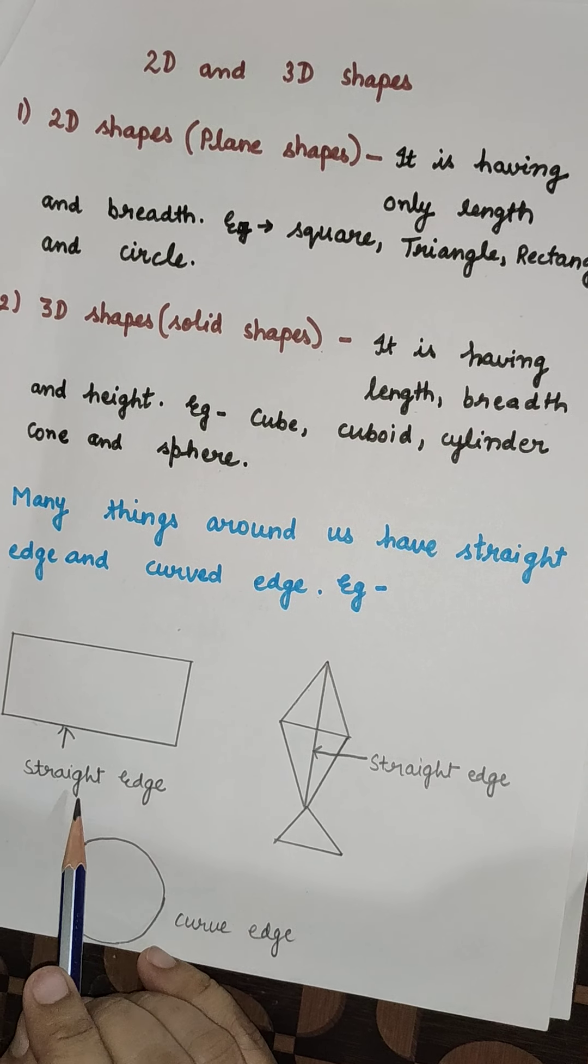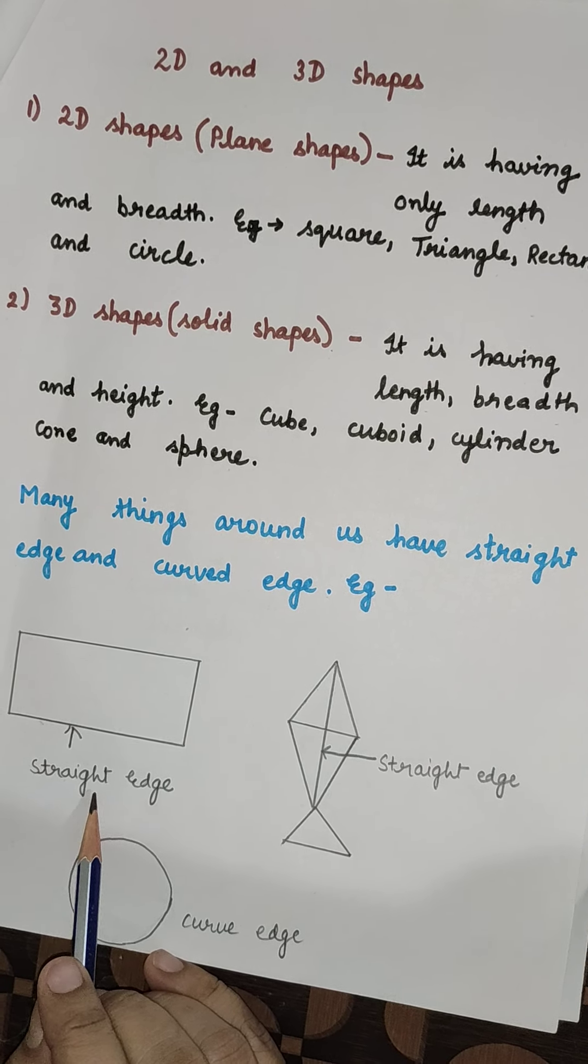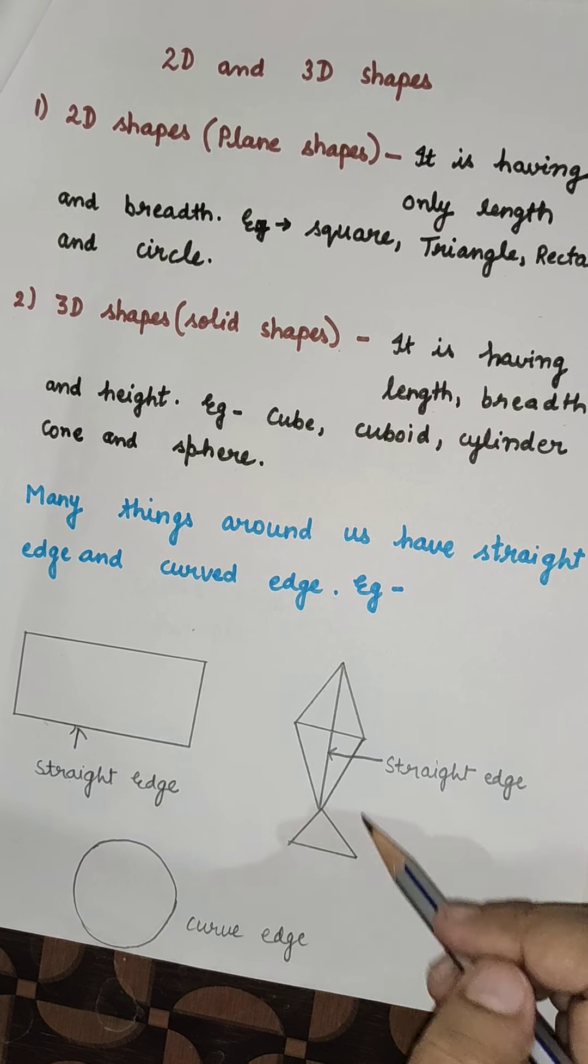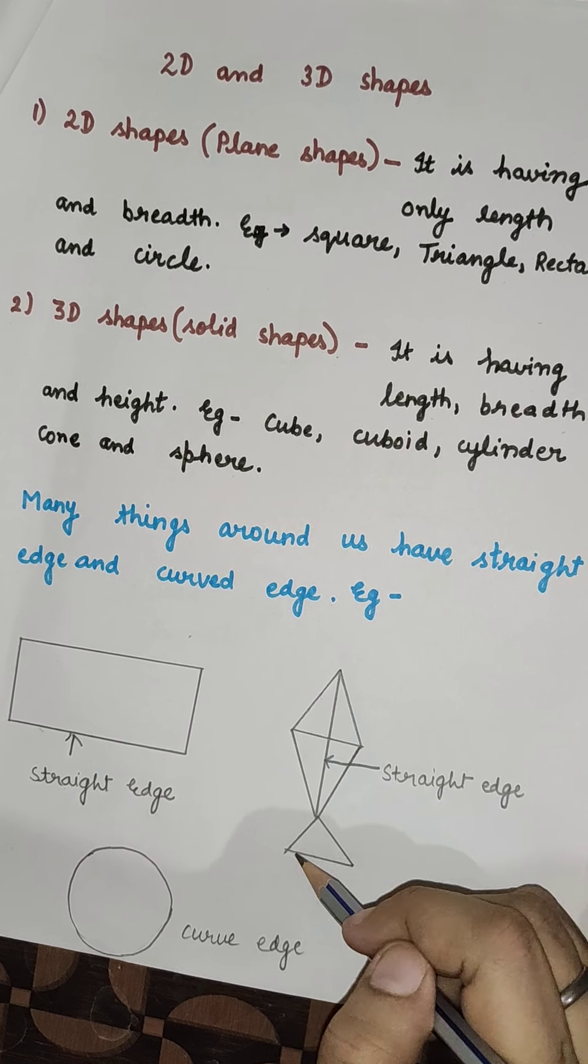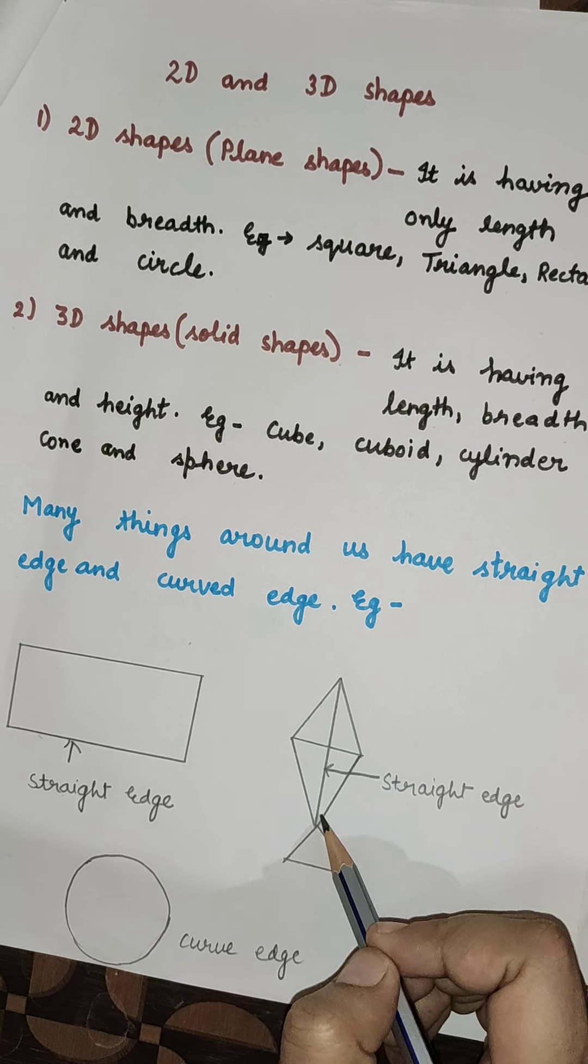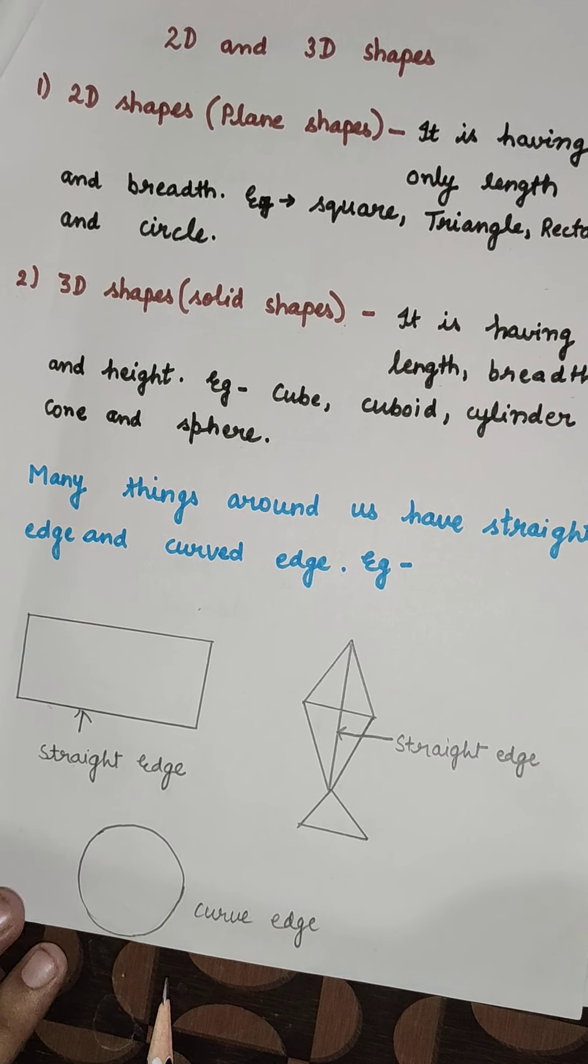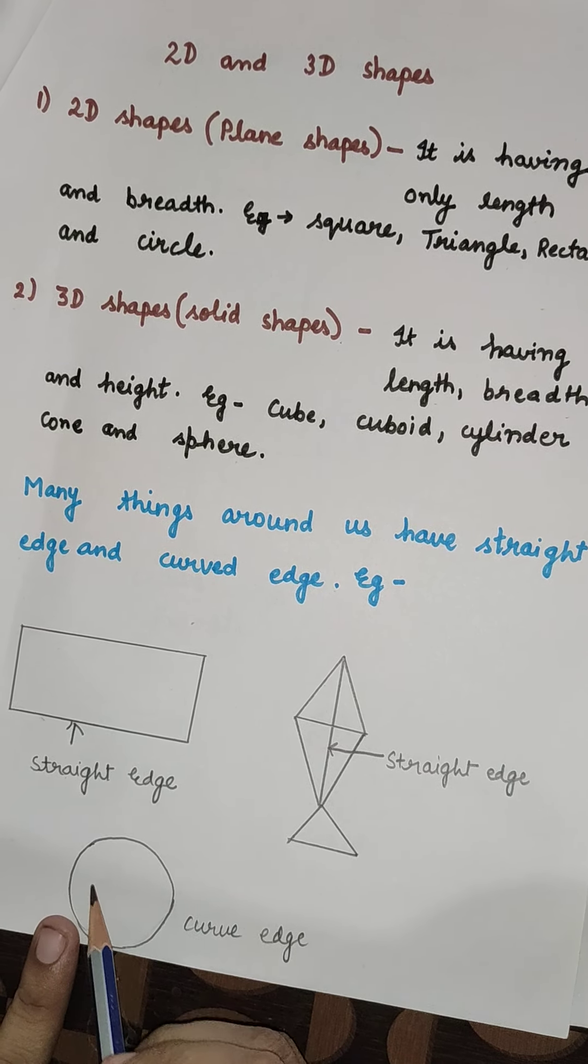Now, this is a straight edge. What is a straight edge? If you can see a kite, this is a straight edge of a kite. And if you take the example of a ball, this is a curved edge of a ball.